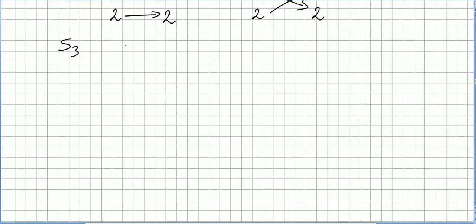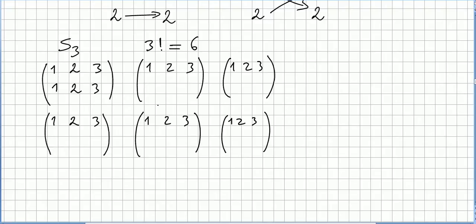We can do the same for the symmetric group S3. We are going to have 3 factorial permutations, so that's six. That starts with {1, 2, 3}. First we have the identity where 1 goes to 1, 2 goes to 2, 3 goes to 3. Now we can do (1, 2, 3)...